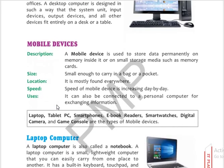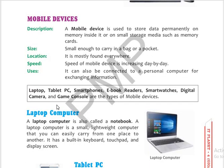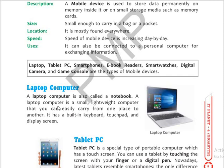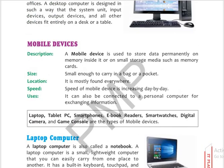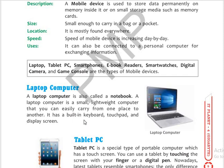Now the favorite device — the mobile device. It fits in a palm. A mobile device is used to store data on memory inside it or on small storage media such as a memory card. Its size is small and can be carried in a bag or pocket. It is found everywhere. Its speed is increasing day by day. Mobile devices are further categorized into six types: laptop computer, tablet PC, smartphone, eBook reader, smartwatch, digital camera, and game console.